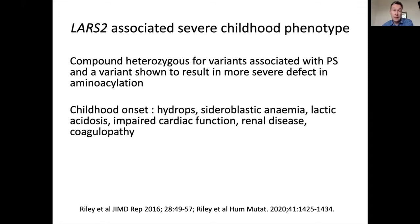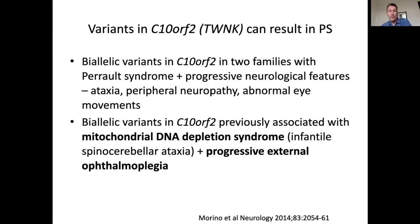More deleterious variants in LARS2 can also cause a very severe childhood-onset phenotype: these children get a specific form of anemia, mitochondrial disruption evidenced by lactic acidosis, and often die in the first few months of life. So for most genes described for Perrault syndrome, at one end of the spectrum there is a mild phenotype — hearing loss and ovarian failure — and at the other end, very severe mitochondrial neurological onset in early childhood. Even though this is a vanishingly rare condition, there is enormous heterogeneity, creating huge challenges when trying to discover new genes.